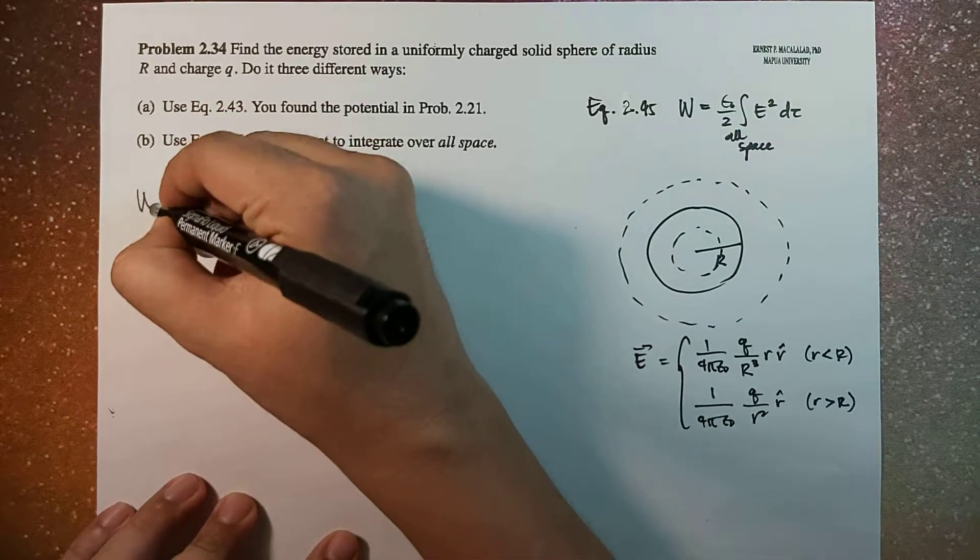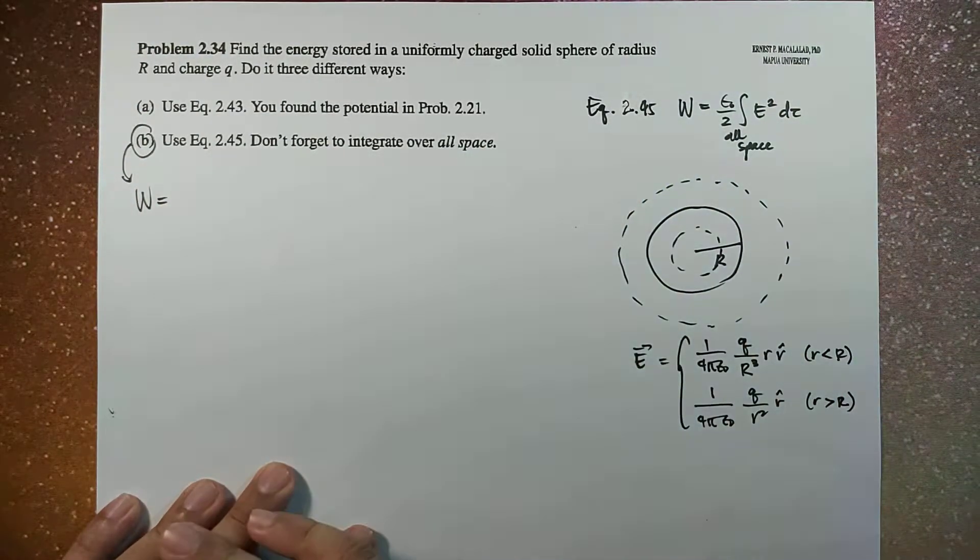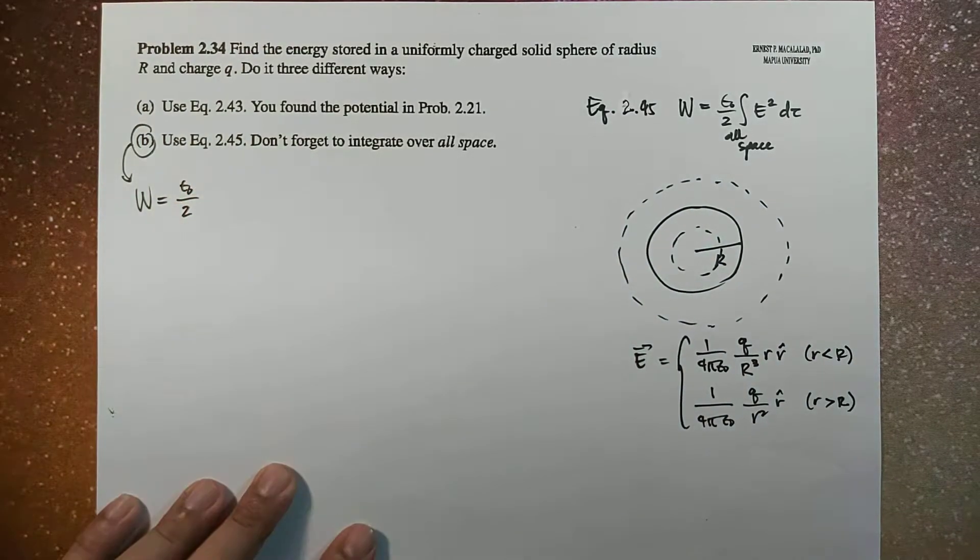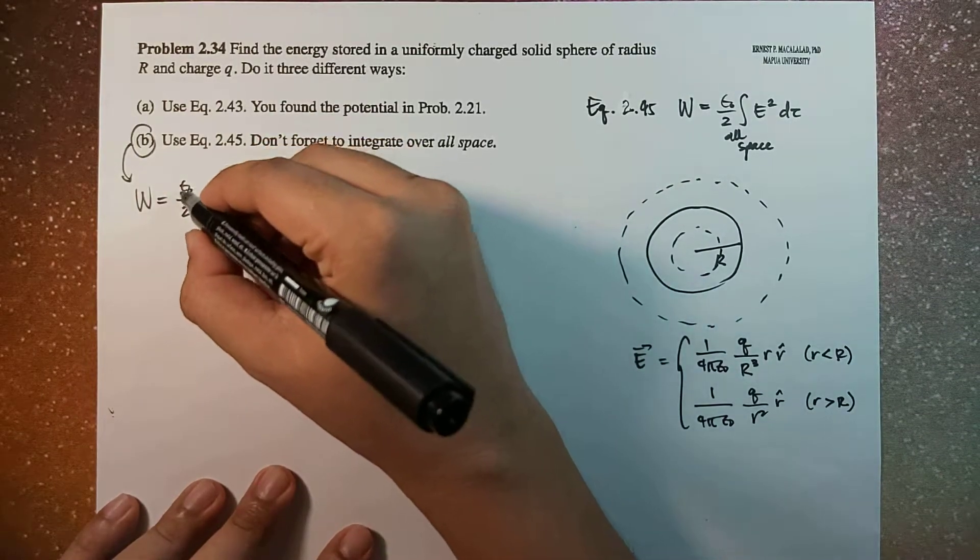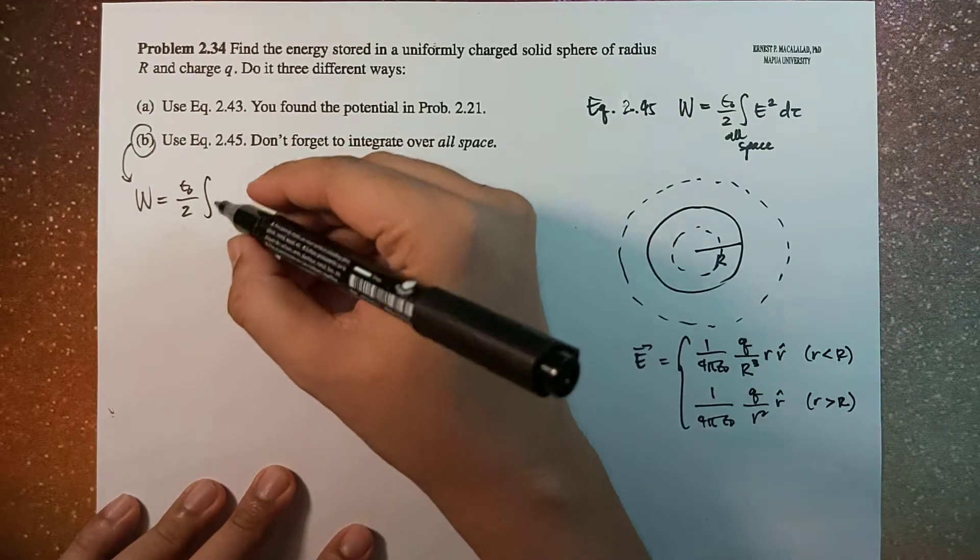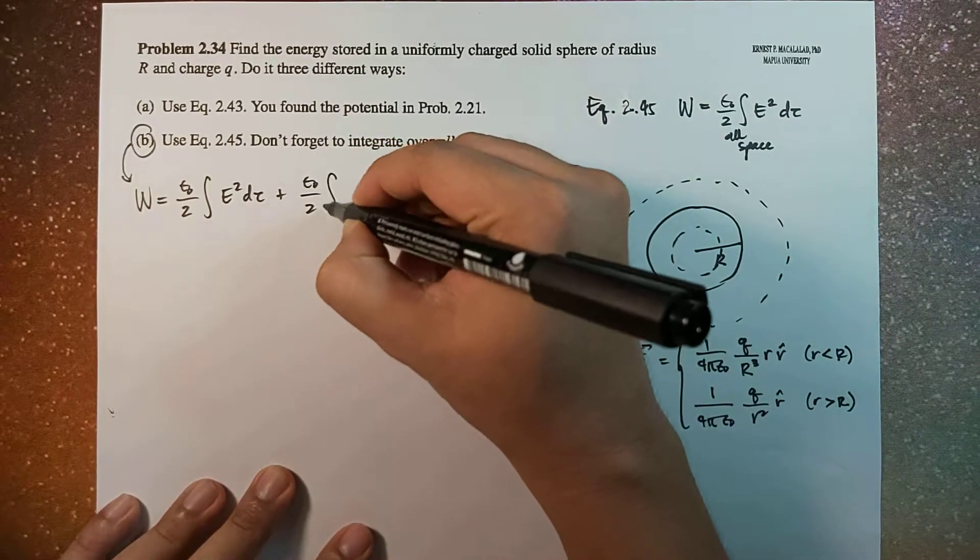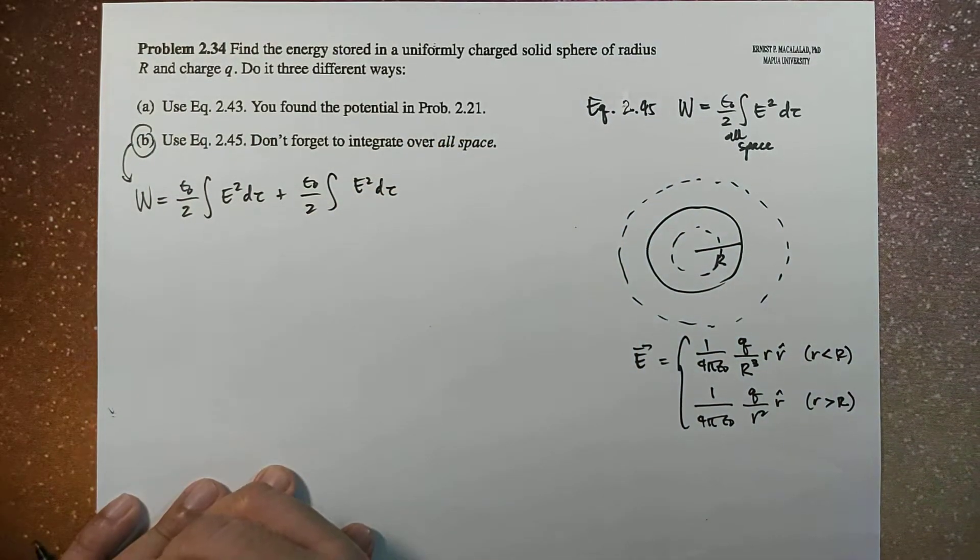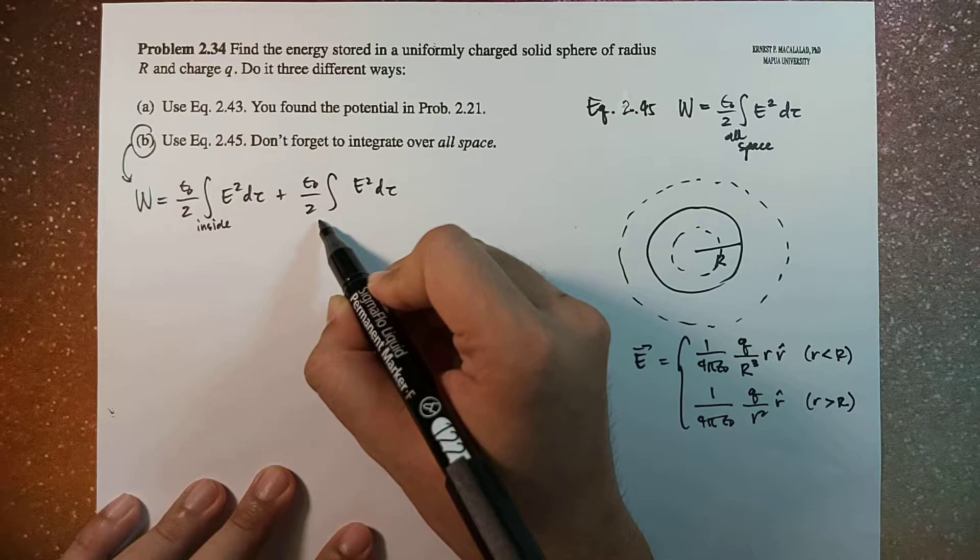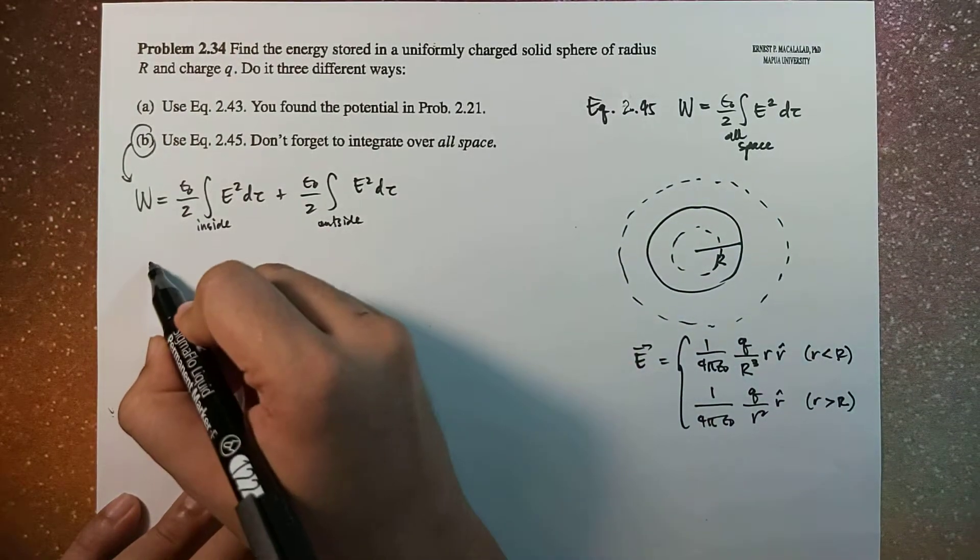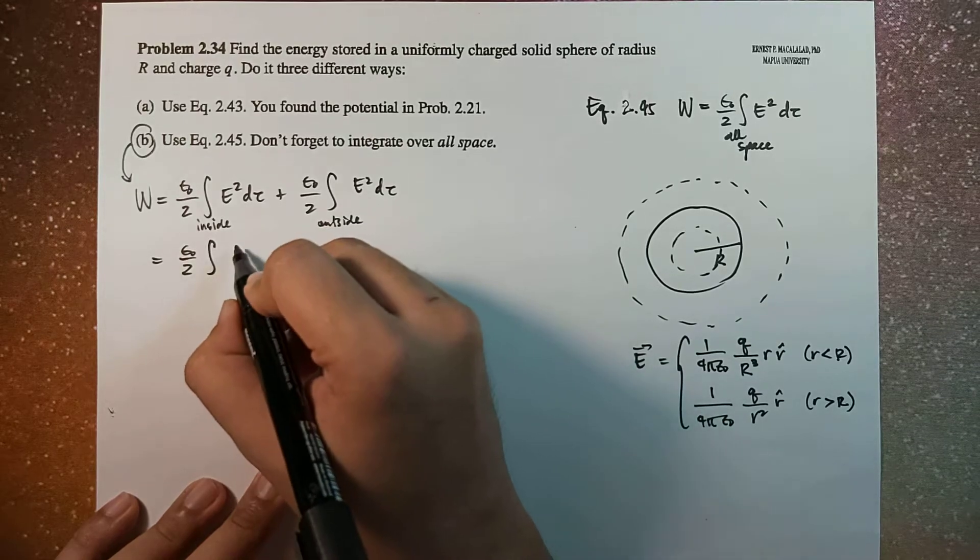Okay, that means the energy stored will now have two terms. So this is epsilon naught over 2 times the integral of E squared d tau plus epsilon naught over 2 times integral of E squared d tau. In this case, this will be for the inside and this is for the outside.